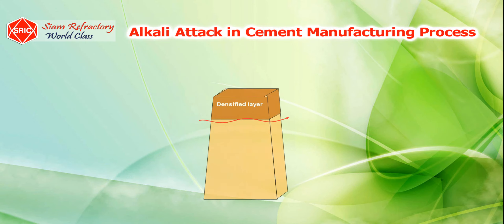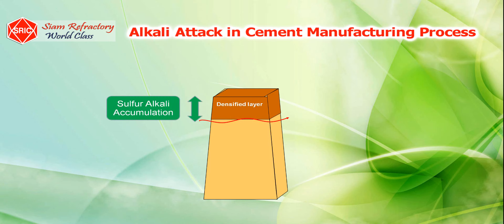For burning zones that mostly use basic bricks, these areas usually accumulate salt from alkali sulfate. They are embedded deep in the refractory structure and become a densification layer, resulting in refractory cracks at a layer of 50 to 70 millimeters and spalling. This also directly reduces the thickness of the brick's layer and makes their service life shorter.